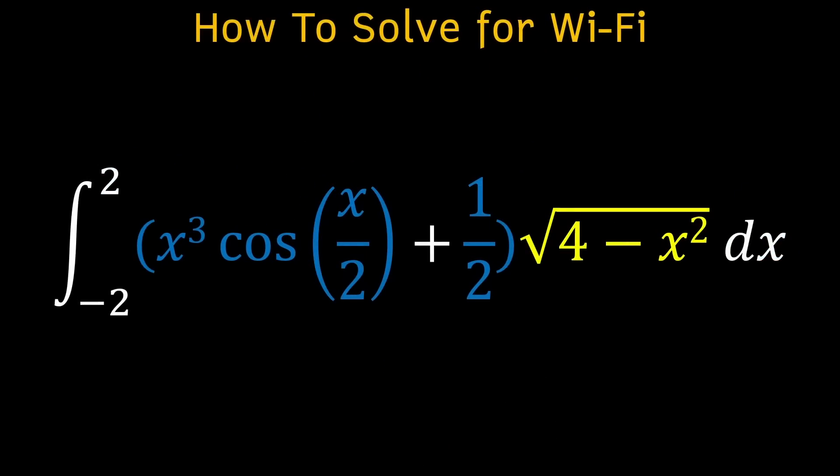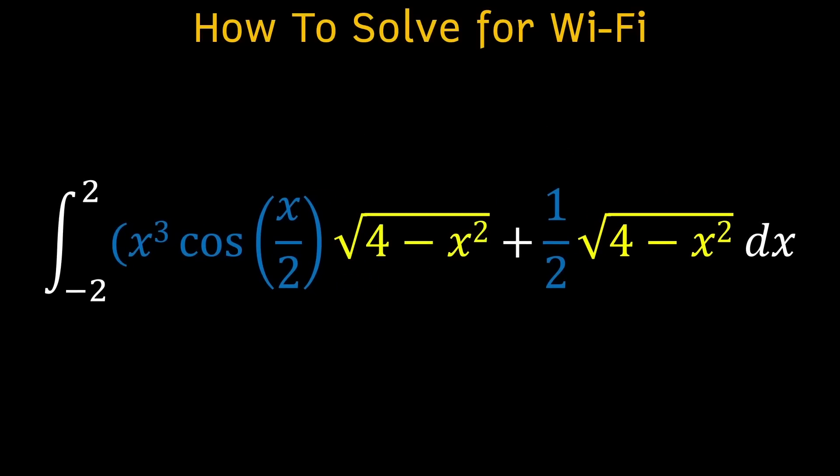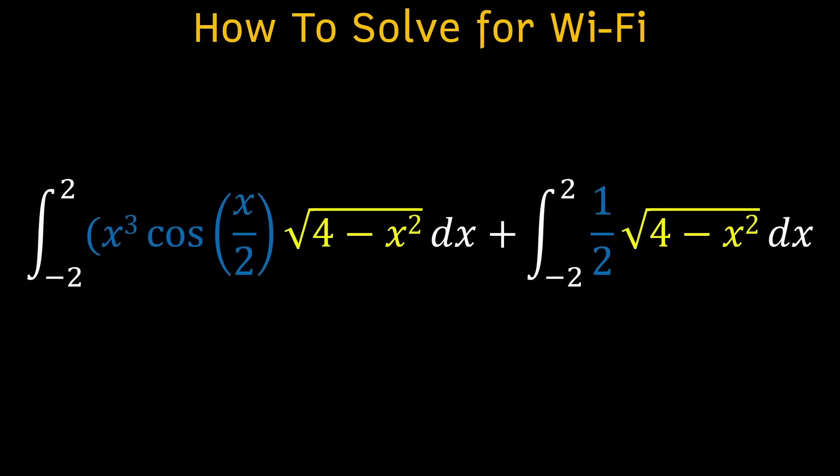On to the actual problem now, the first thing we want to do is distribute this square root expression to the others inside the parentheses. This gives us the sum of two separate expressions and means we can split this big integral into two smaller ones that we can tackle separately.